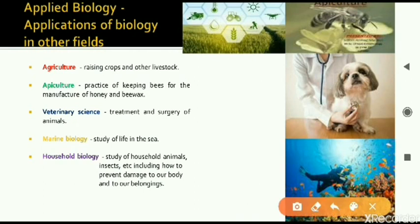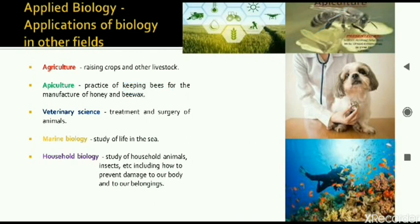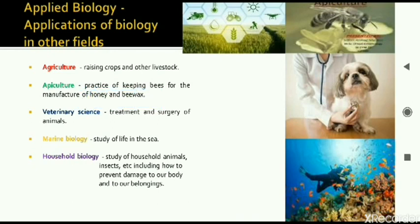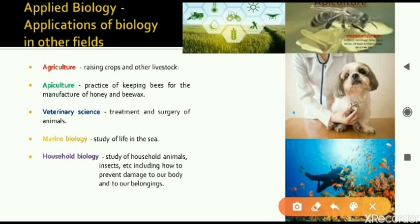Next, apiculture. Apiculture is related to the practice of keeping bees — rearing honeybees, for example. From that, what we get in return is beeswax and honey, which are commercial products. It is very good for economic purposes. Next one is veterinary science, which is related to the treatment and surgery of animals.